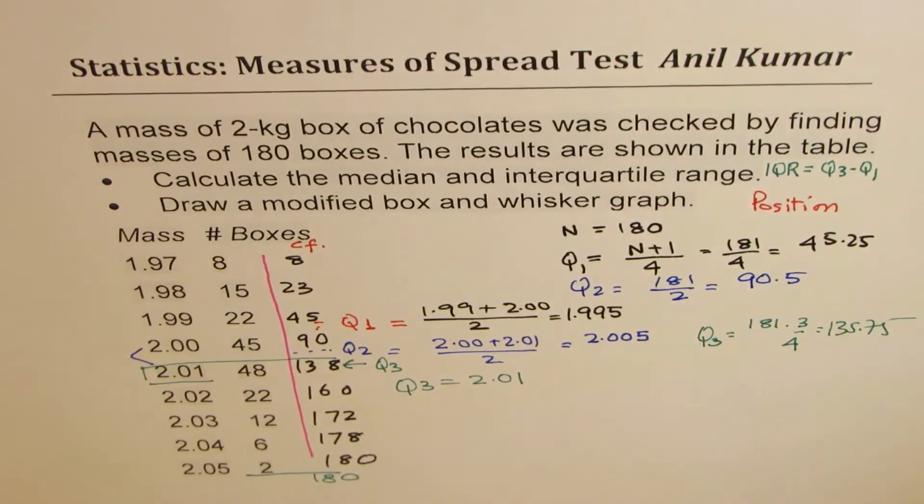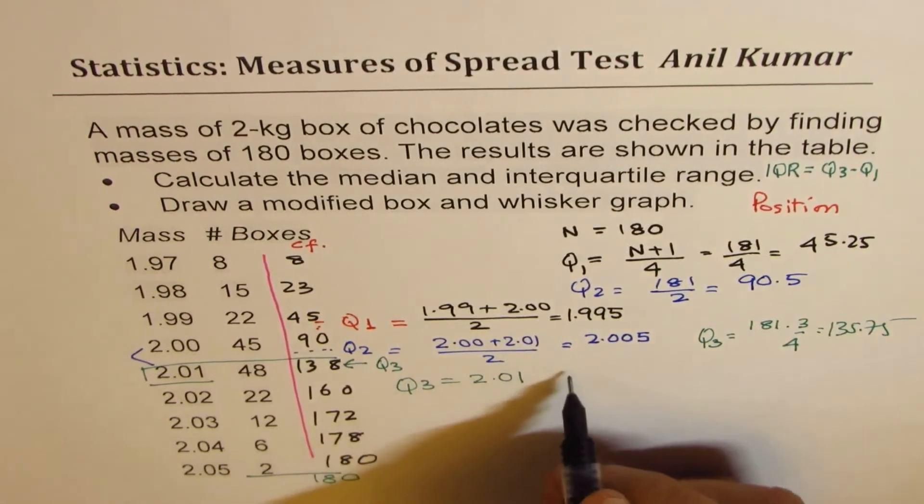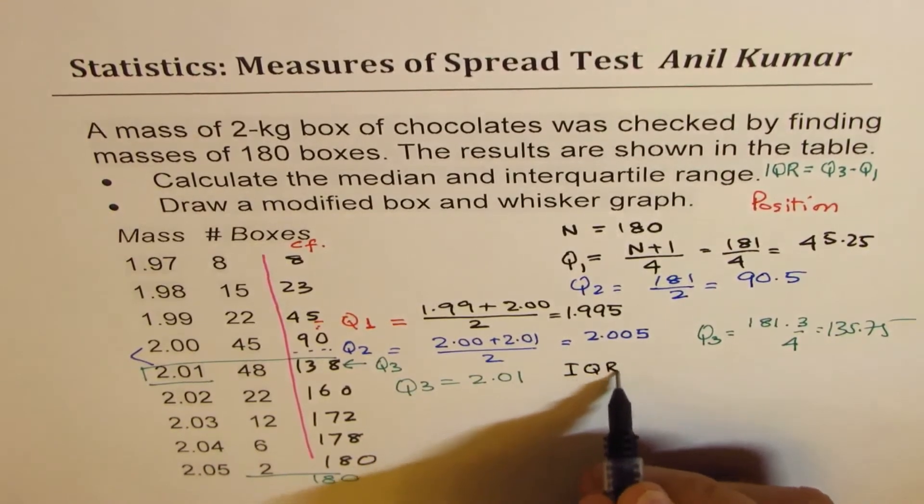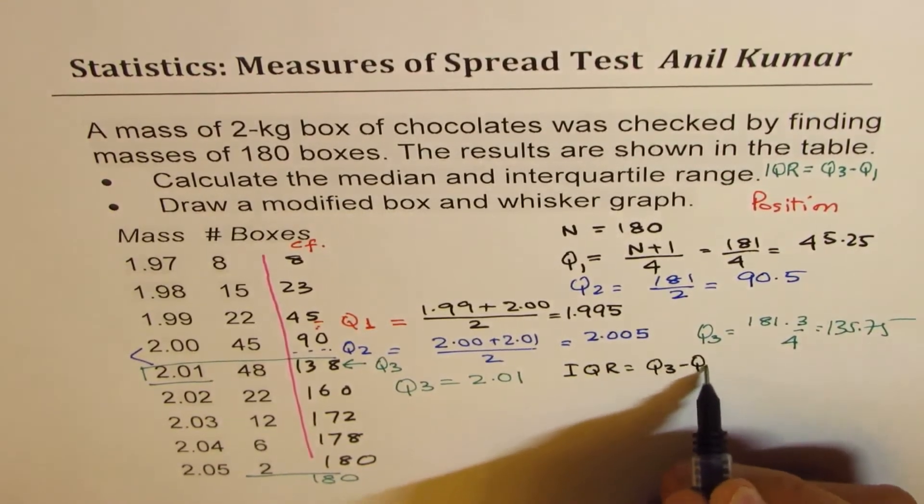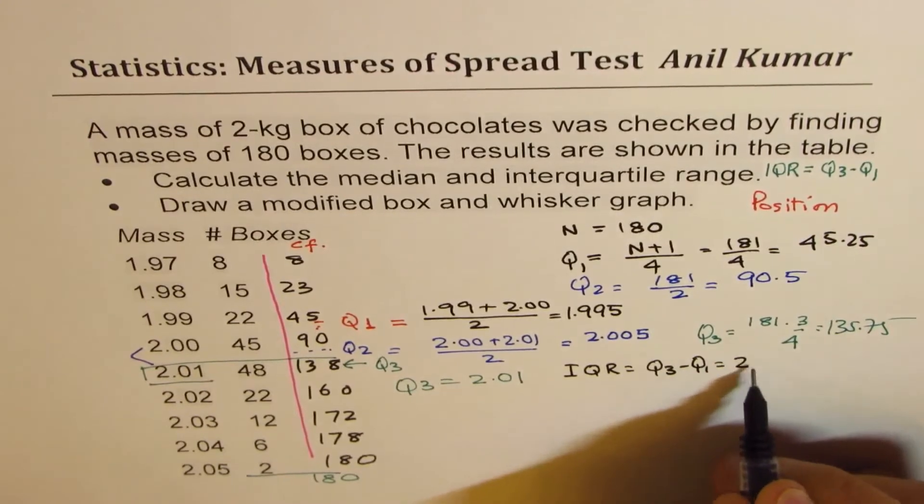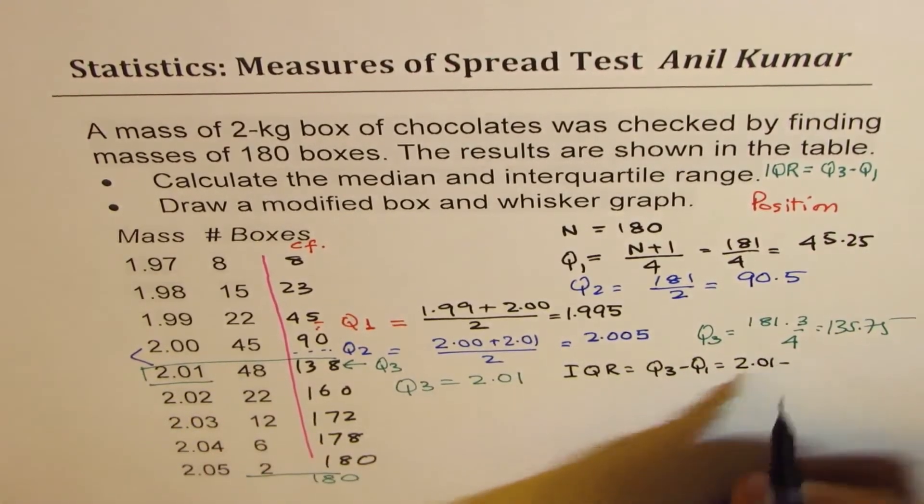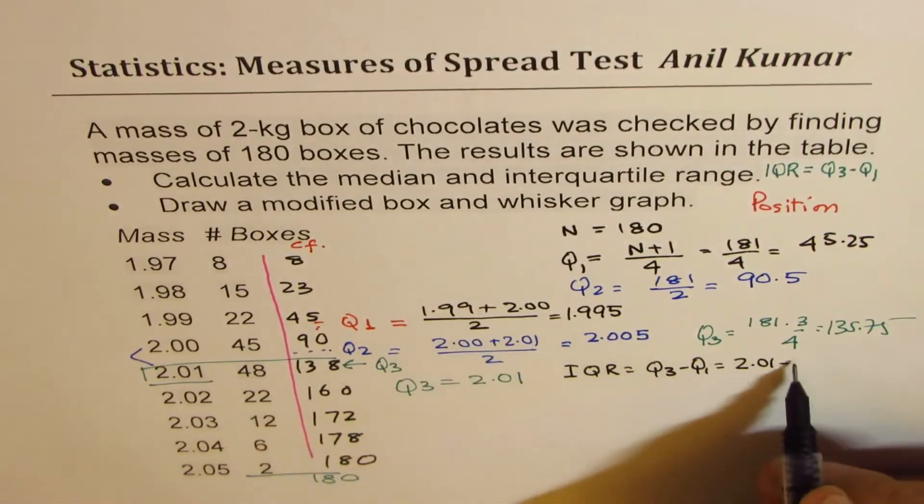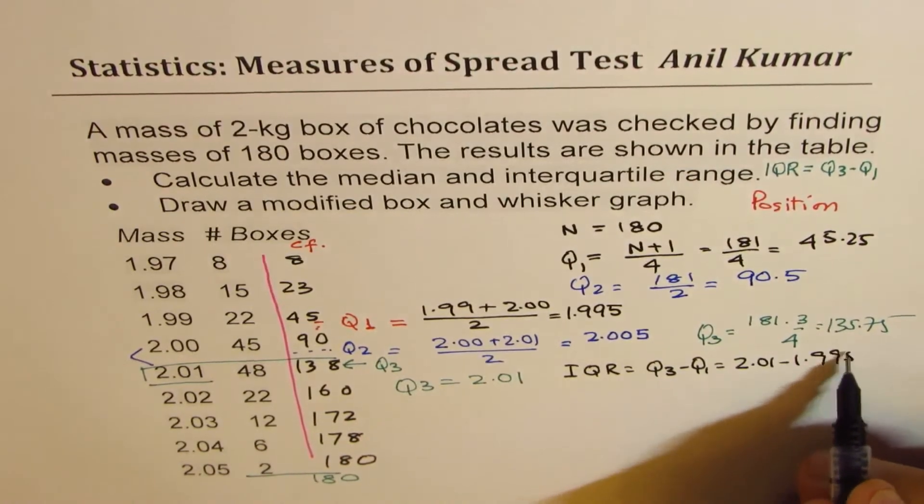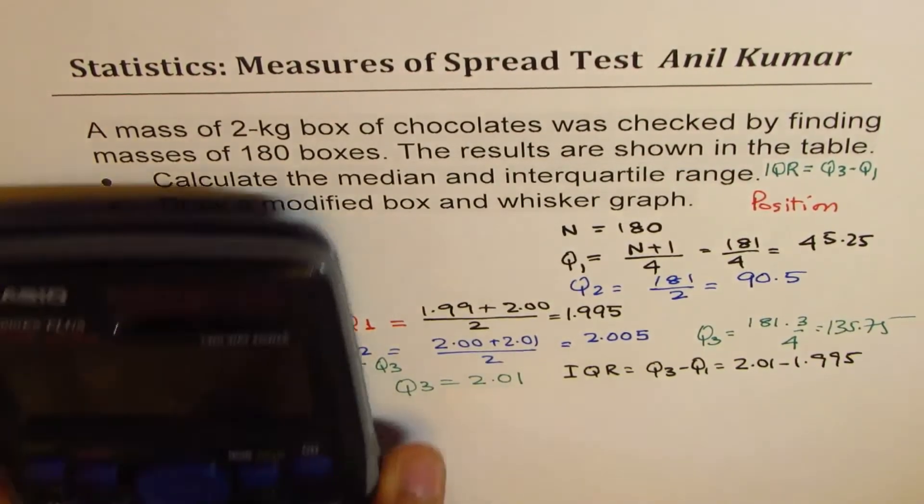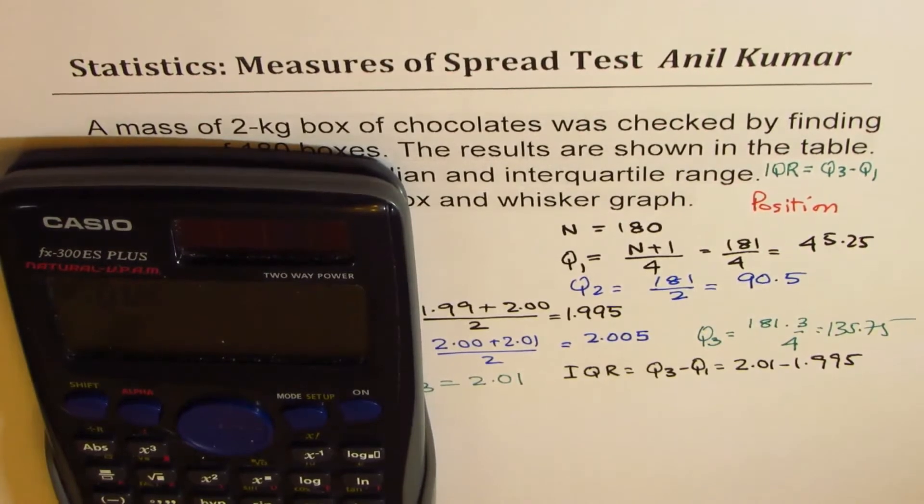Now interquartile range is Q3 minus Q1, which is 2.01 take away 1.995. So 2.01 take away 1.995 gives you in decimals 0.015.